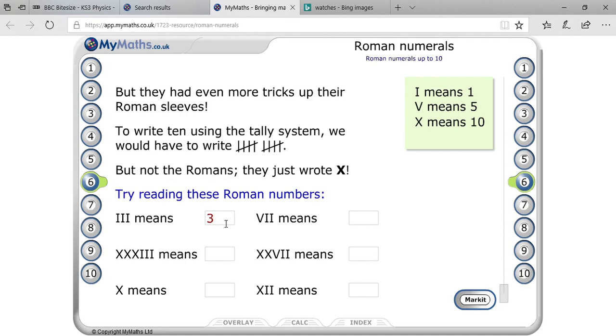It will be 3, because I, I, I, that is 3. Here you can see V, I, I. V means 5 and I, I, that is 2. So 5 plus 2, that will be 7.